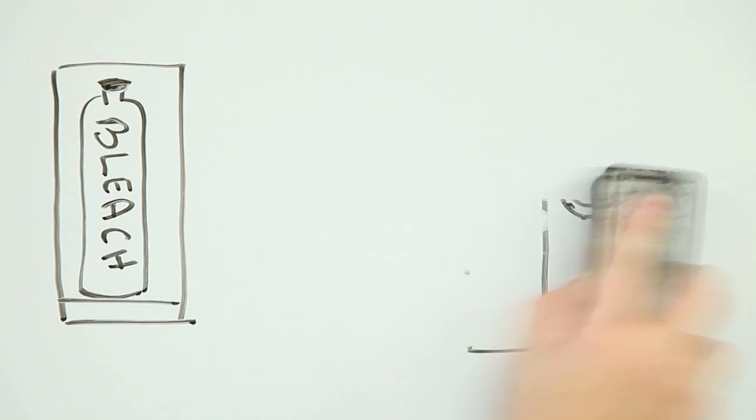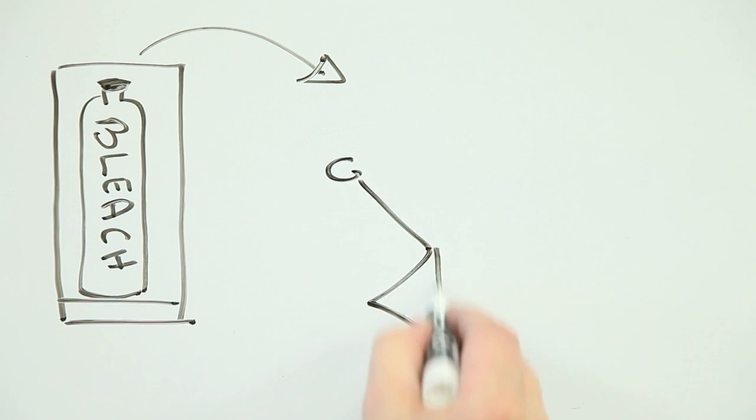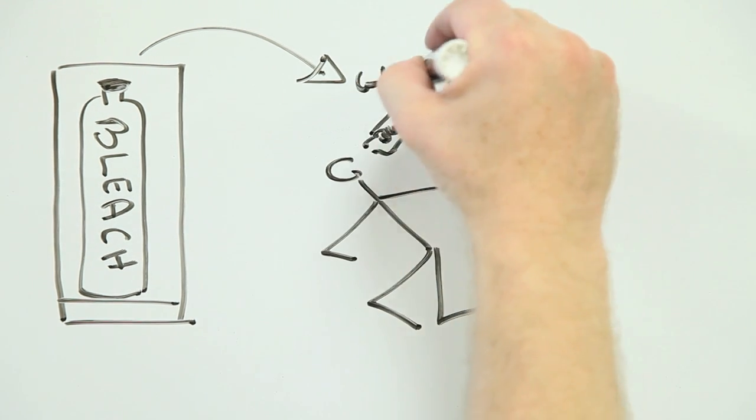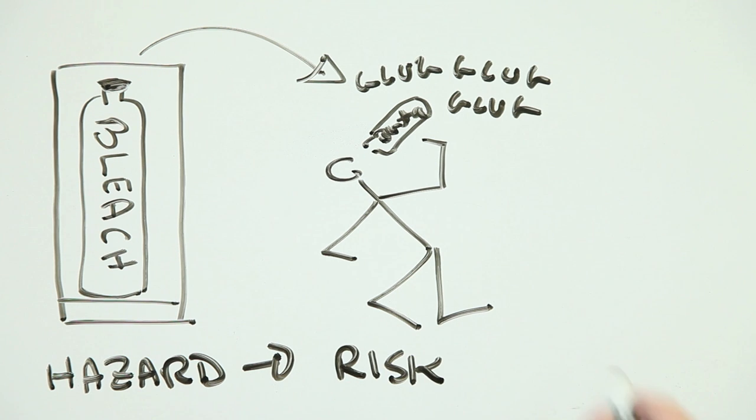Of course, as soon as someone does do something really stupid, like drink the stuff, there's a real probability of them harming themselves. The hazard is transformed into a risk.